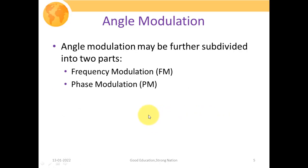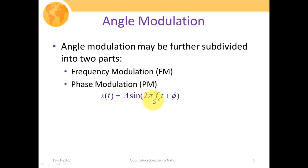Angle modulation may be further subdivided into two parts. We can modify the angle values by two methods: either we change the frequency or we change the phase. If we produce changes in the carrier signal's frequency, that technique is termed frequency modulation. If we produce changes in the phase angle of the carrier signal with respect to the amplitude of the message signal, it is termed phase modulation. So ST equals A sine of (2π f_c t + φ), where we can vary either the frequency or the phase value.